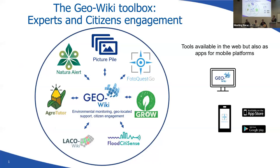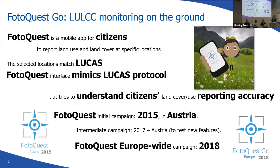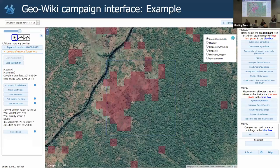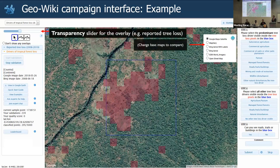We have been doing this also with GeoWiki, and we set up a specific campaign to detect drivers of tropical deforestation in Peru, because there we could do some more tests, specifically with respect to country data which was available in that context, where we can run those tests.